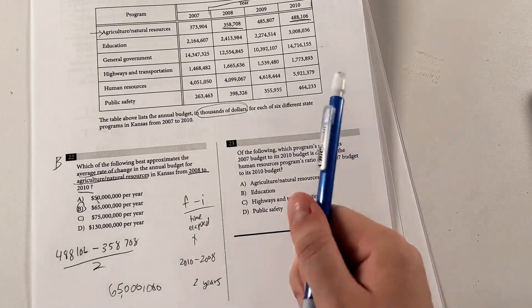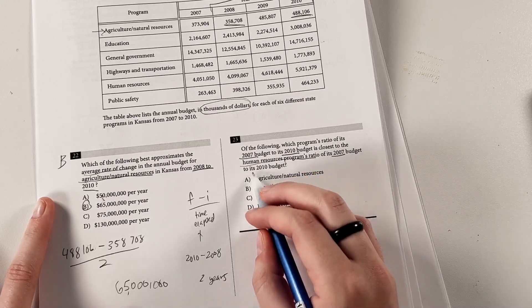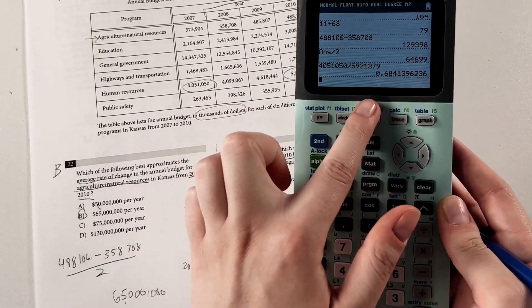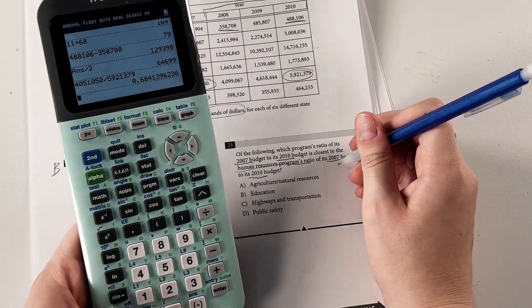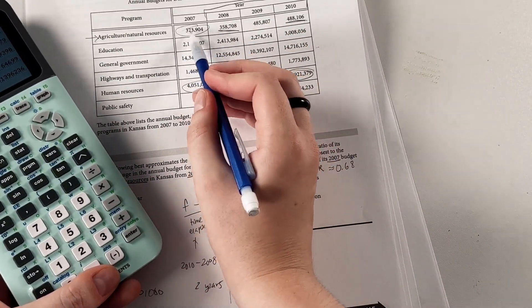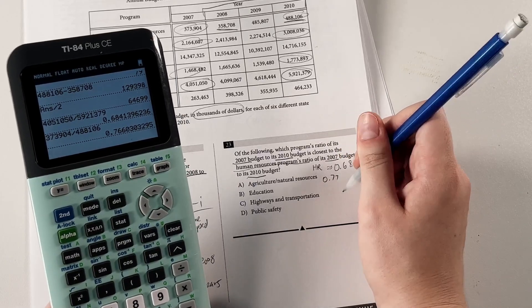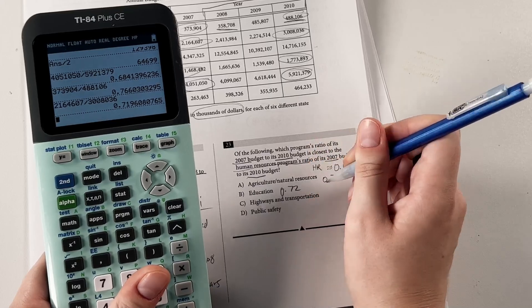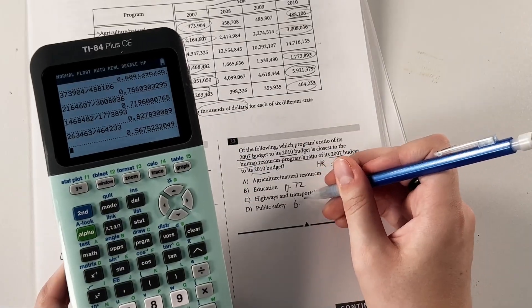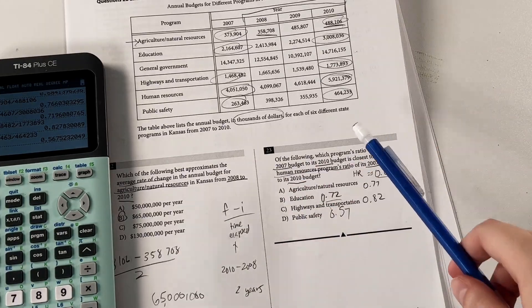Now, which program's ratio of its 2007 to 2010 budget is closest to the human resources program's ratio of the 2007 to 2010 budget? That's probably a good value to get first. So we're looking for 2007 divided by 2010. So that ratio between 2007 and 2010 is going to be 0.68-ish for HR. So now let's just compare. So we can try dividing that by that. Same for education and highways and transportation. For agriculture, it's closer to 0.77. So that's probably not right. For this one, it's a little bit closer. It's 0.72. Highways and transportation, geez, that's 0.82. Probably public safety. So that is 0.57. So I don't love the difference between these two, but it definitely is the closest. But definitely, if there's that much of a difference, I would make sure to double-check yourself. It's easy to type stuff wrong in your calculator.